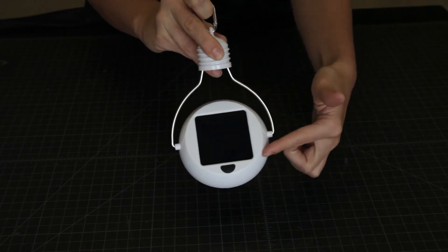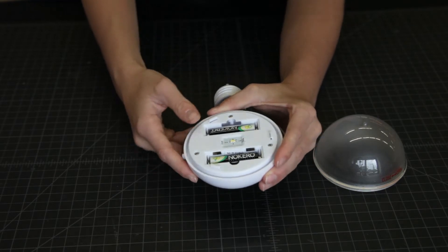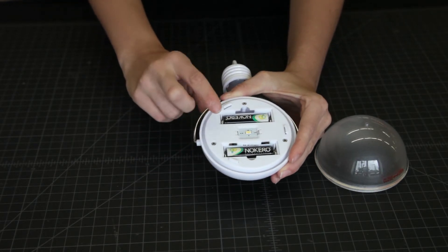Sunlight is captured by this solar panel and converted into electricity stored in two rechargeable AA-sized batteries.